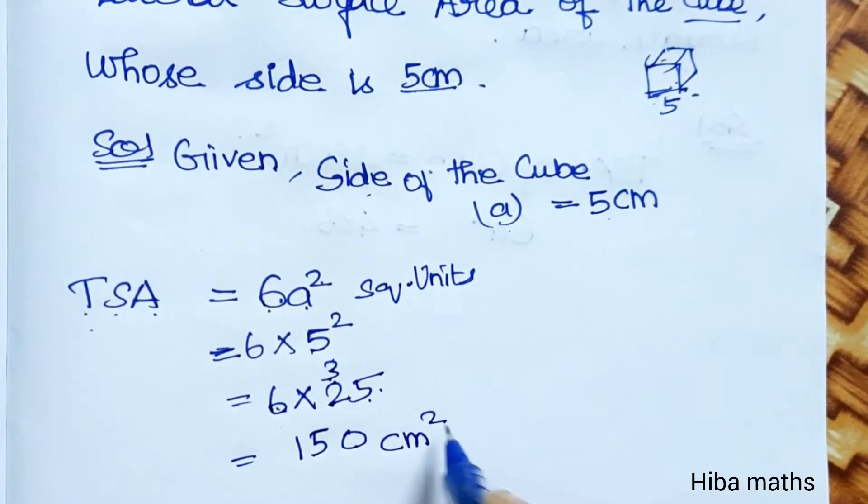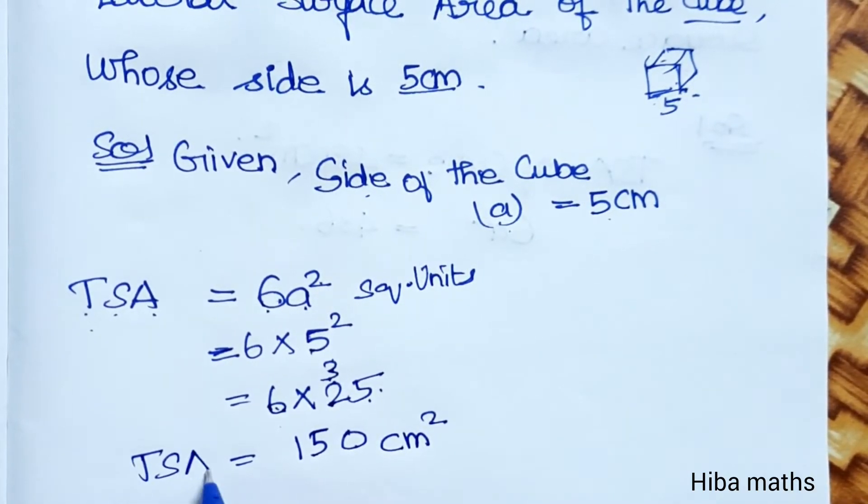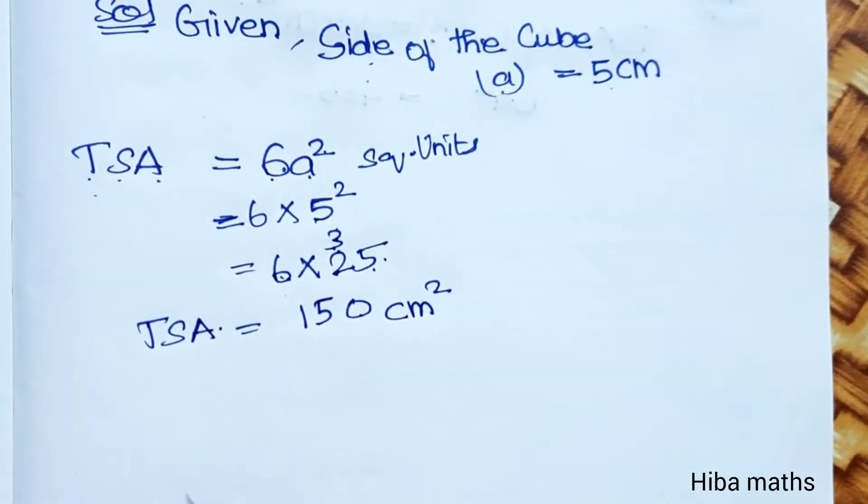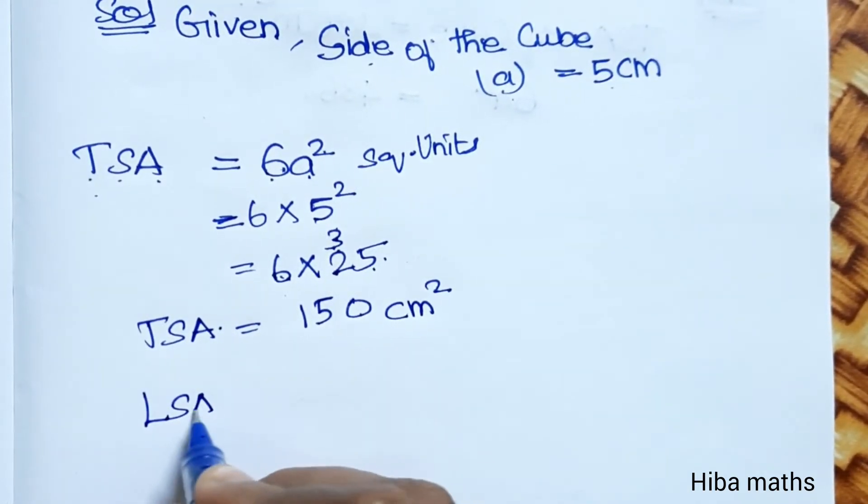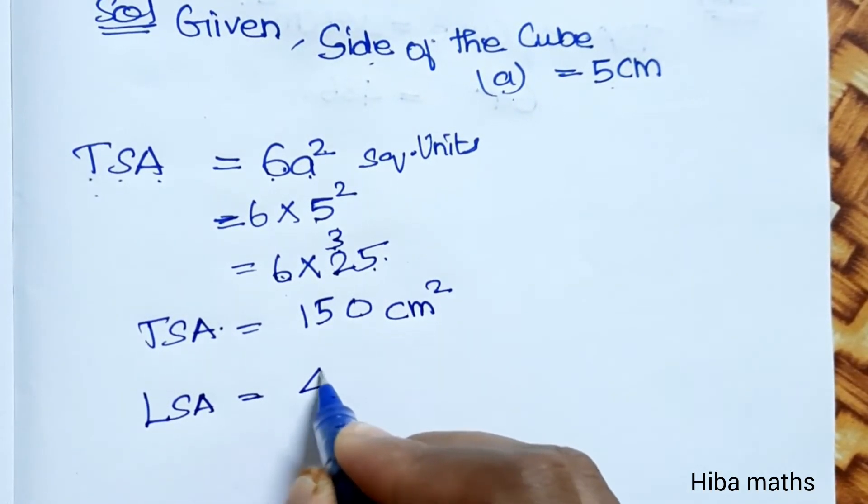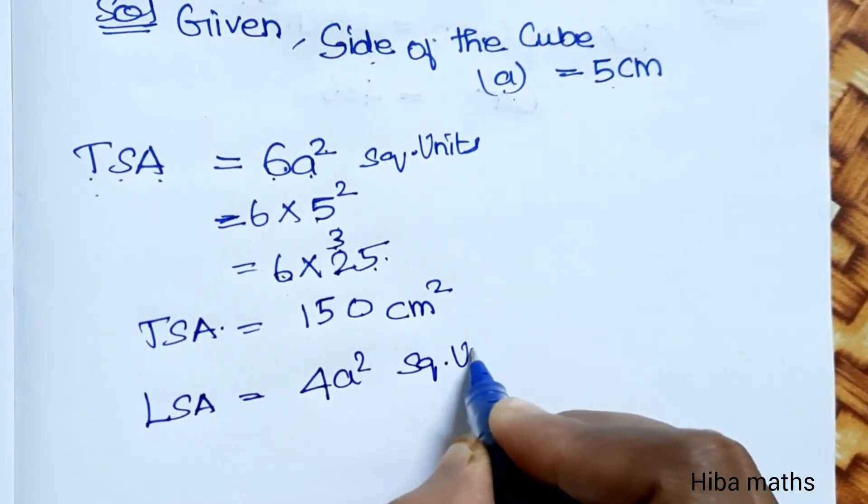The TSA value is 150 centimeter square. This is the value of total surface area for the cube.